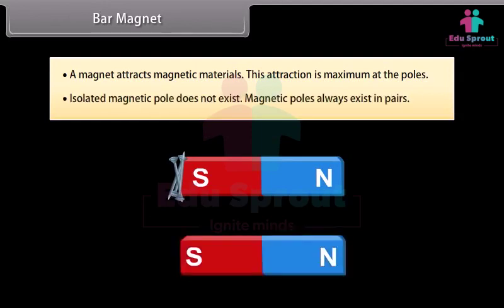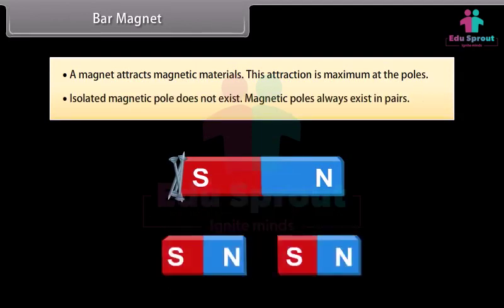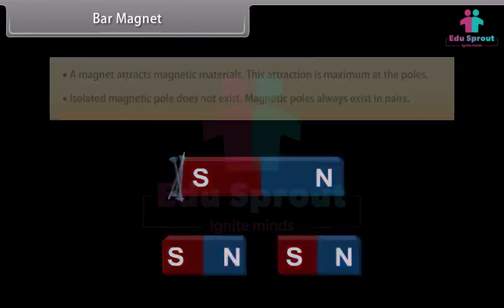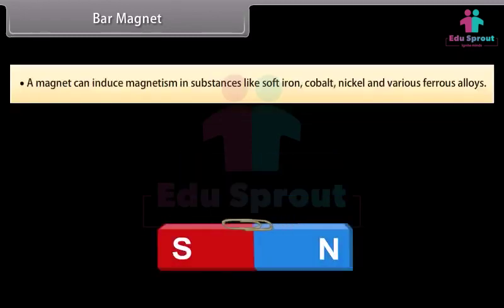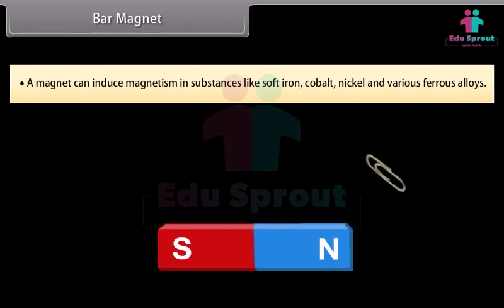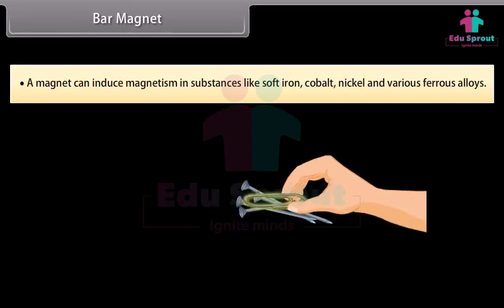An isolated magnetic pole does not exist; magnetic poles always exist in pairs. A magnet can induce magnetism in substances like soft iron, cobalt, nickel, and various ferrous alloys.